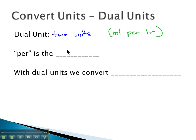And the important thing we know about dual units is the word per is the fraction bar. When we see miles per hour, we put the miles over hours. Miles per hour, per is that fraction bar.